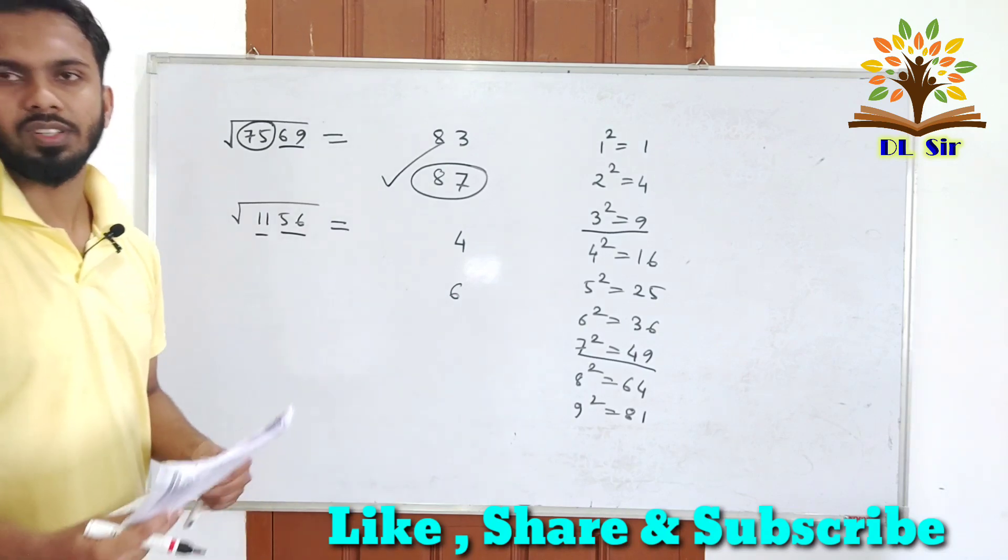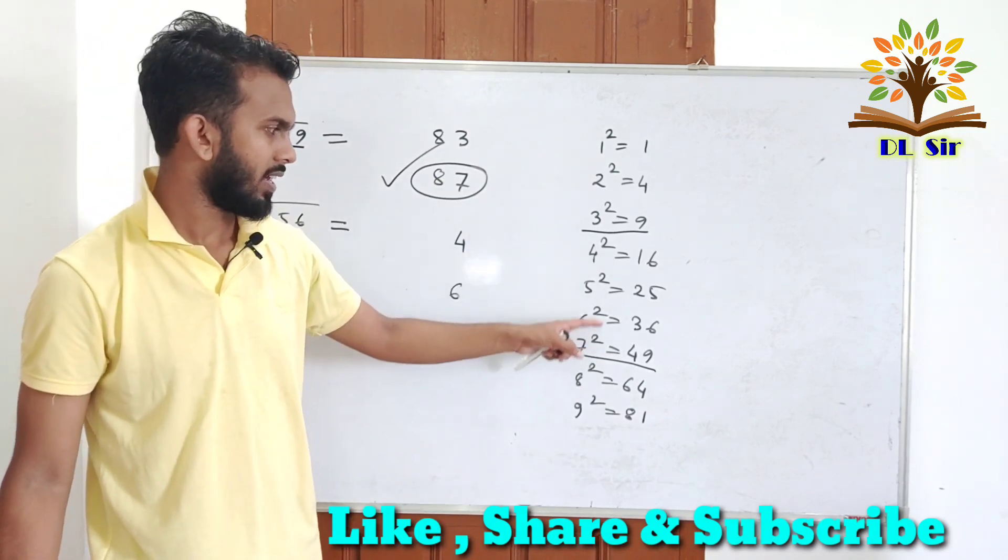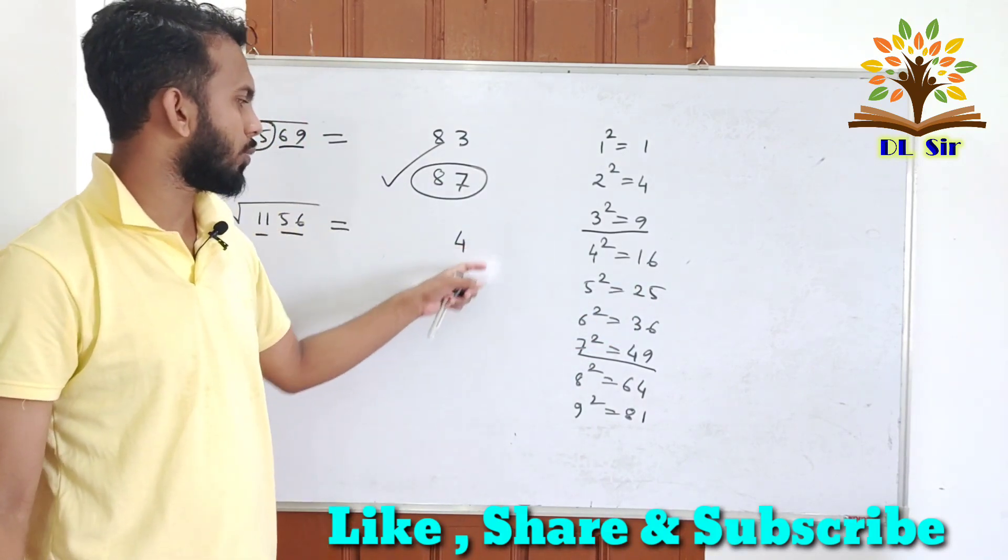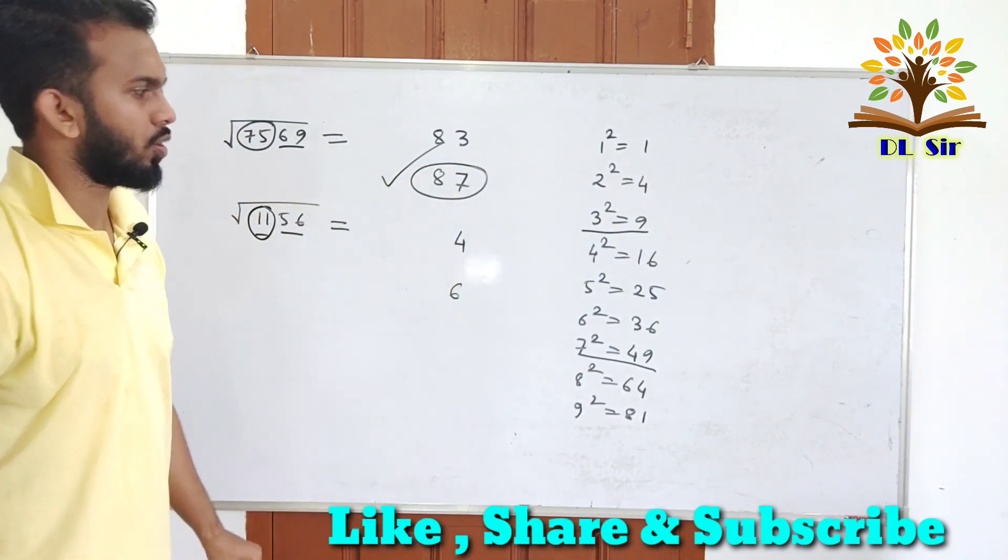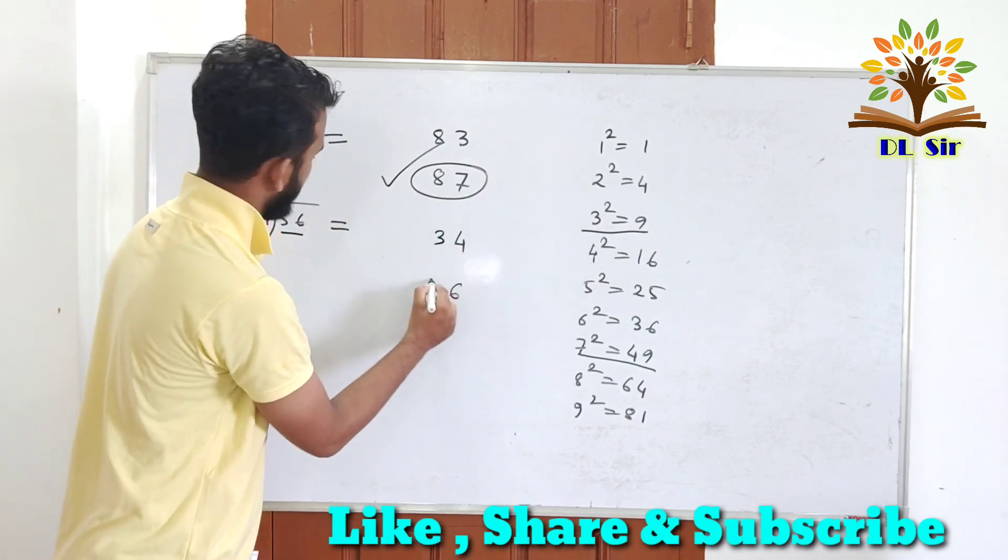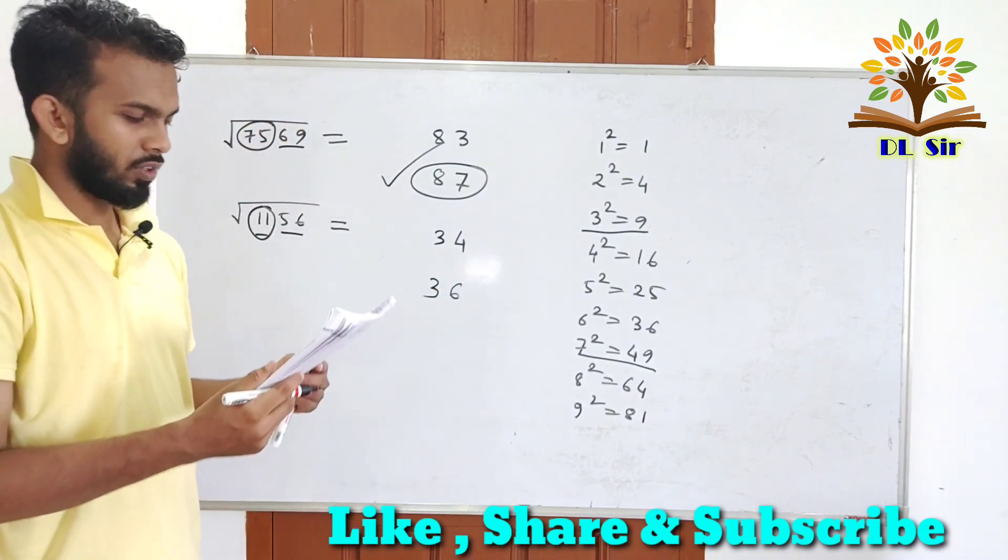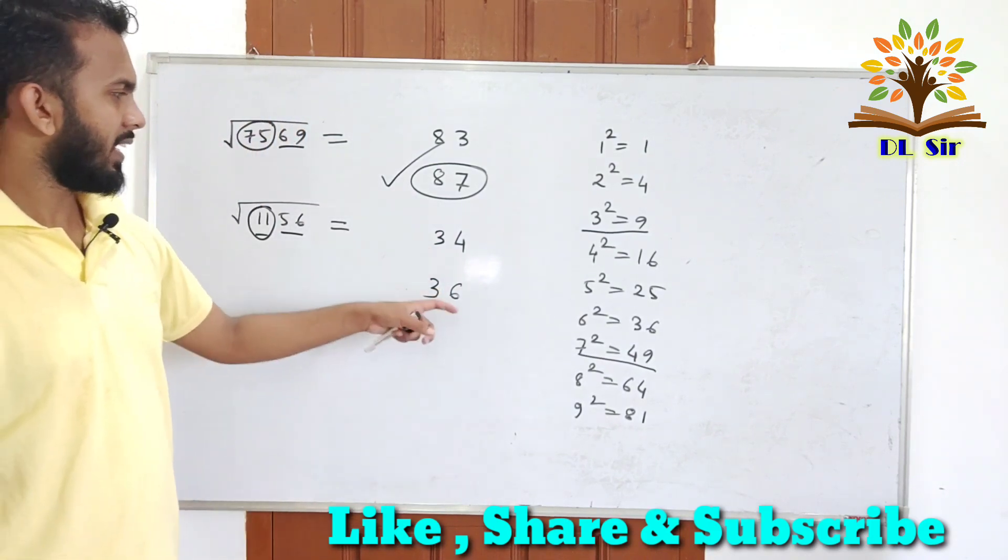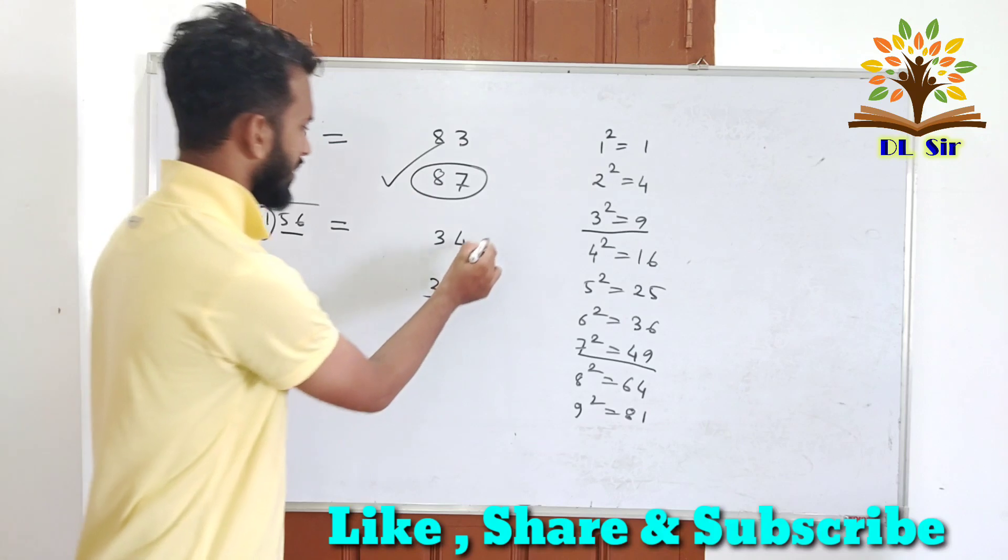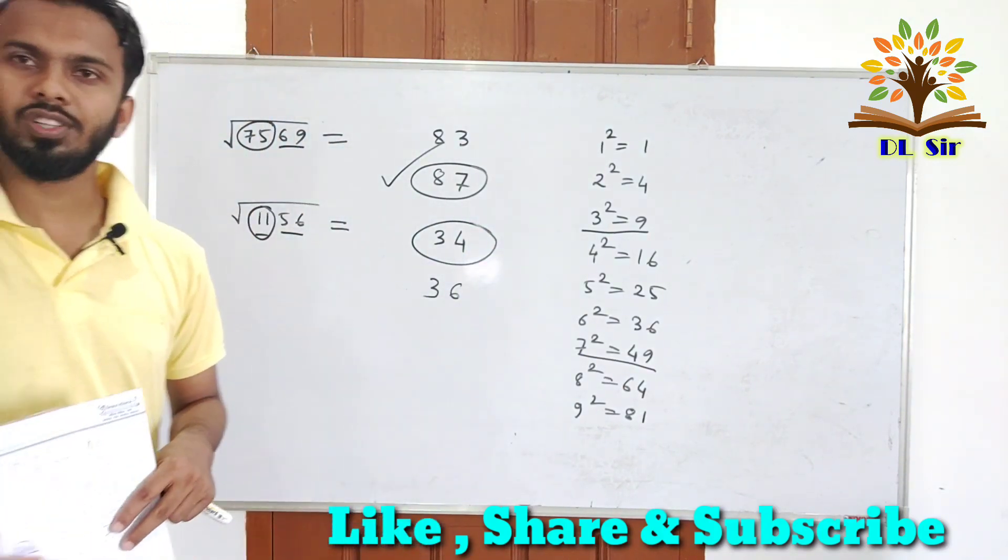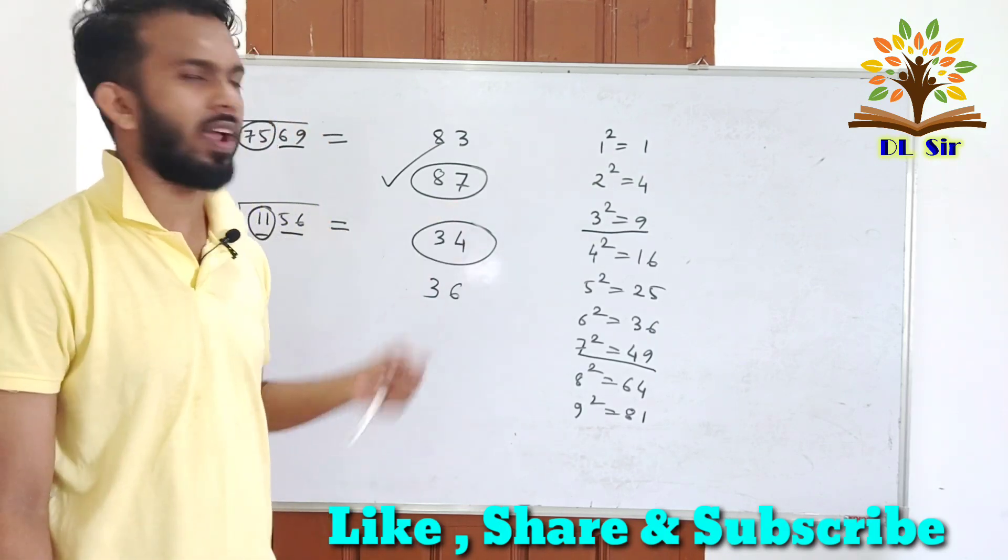Next we check 11. Unit place a 6, that means 4 square or 6 square. Now check 11 is between 9 and 16. 11 is closer to 9, that means 3 square. Now which will it be 34? 9 is closer, 34 square.